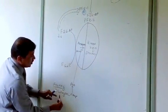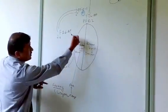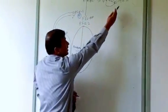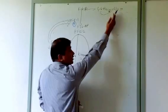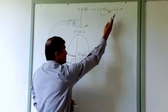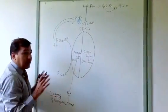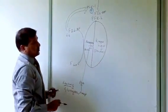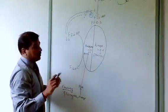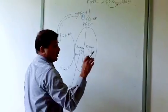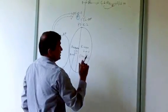Glucagon, by doing all this, is trying to increase blood glucose concentration. That is why glucagon is a hyperglycemic hormone.